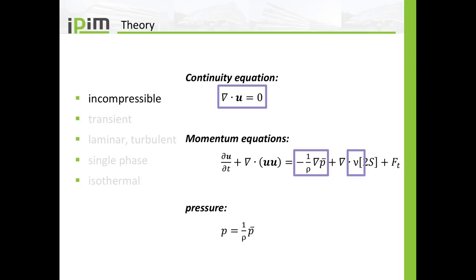Regarding the equations being solved: incompressibility means that the continuity equation reduces to the simple equation where the divergence of the velocity is zero. In the momentum equations you can divide by the constant density, and what you end up with is this pressure gradient term with the density. In the diffusion term you have the kinematic viscosity instead of the dynamic viscosity. Also in this solver, P is not the pressure in Pascals but is the pressure divided by density.